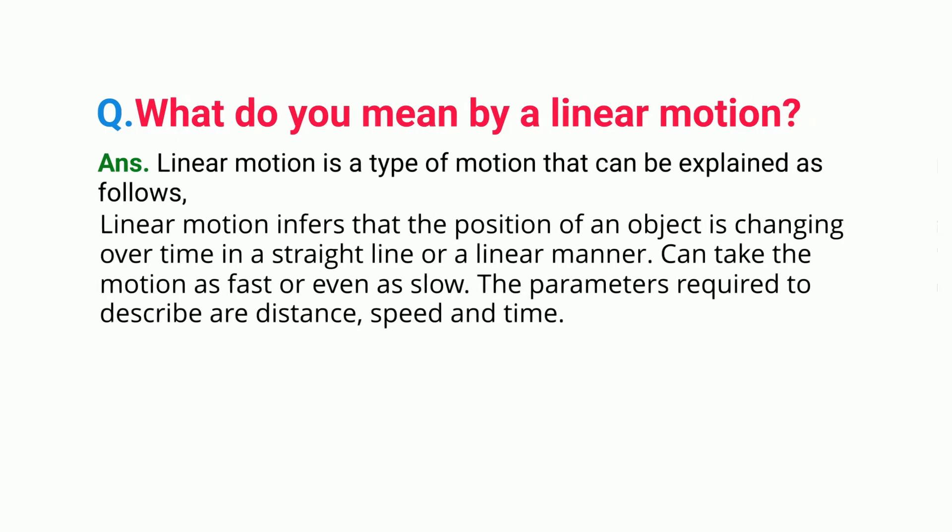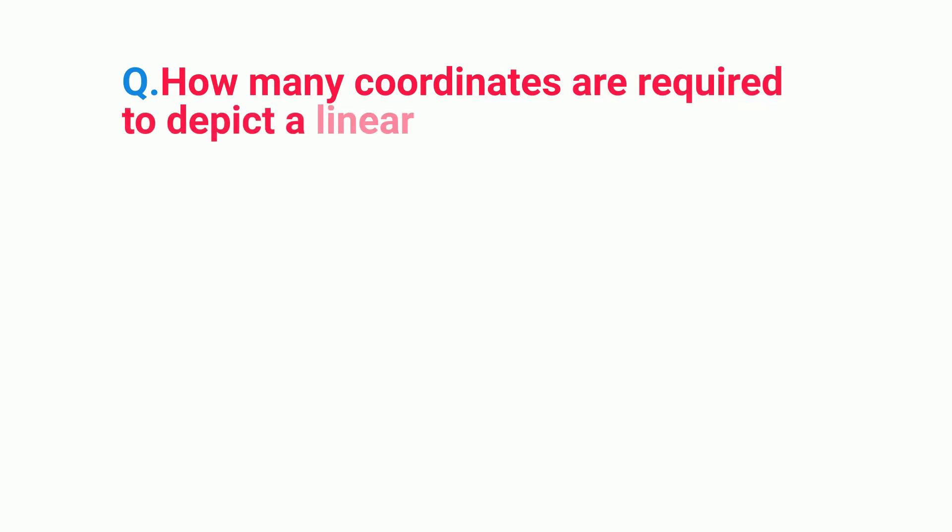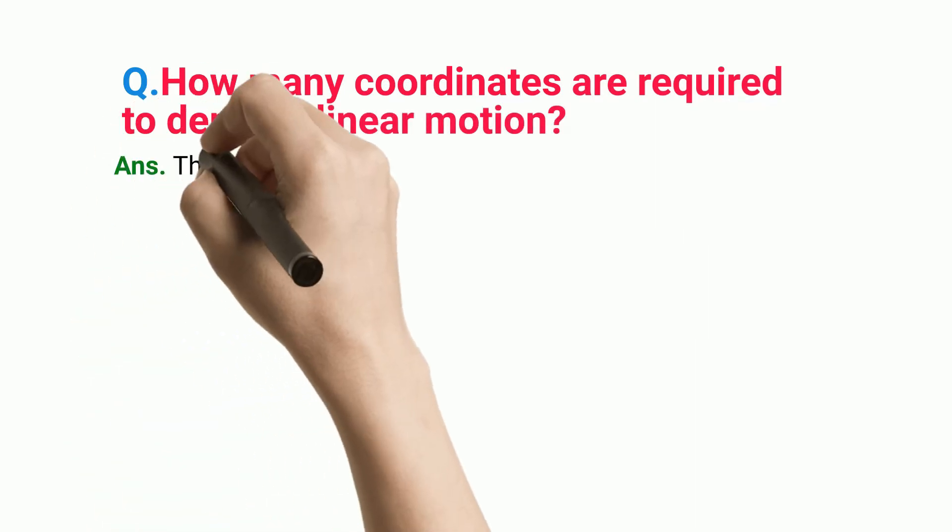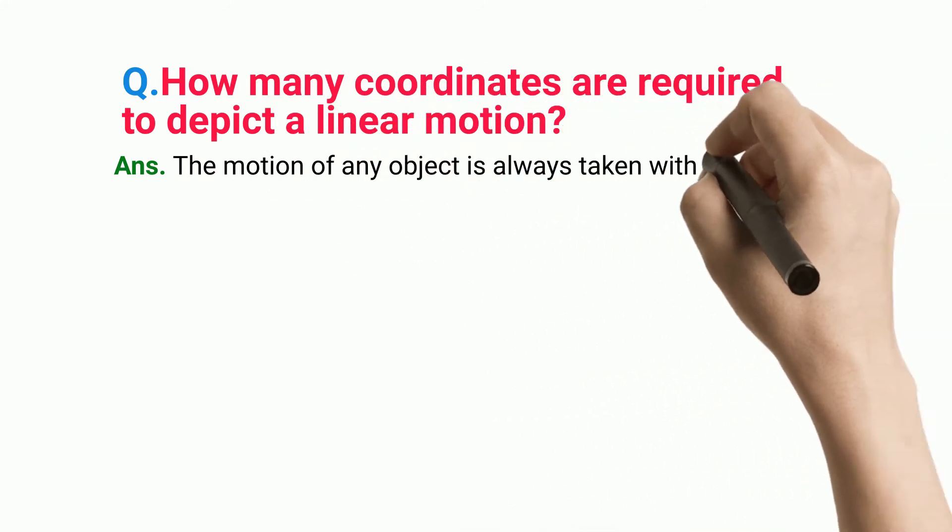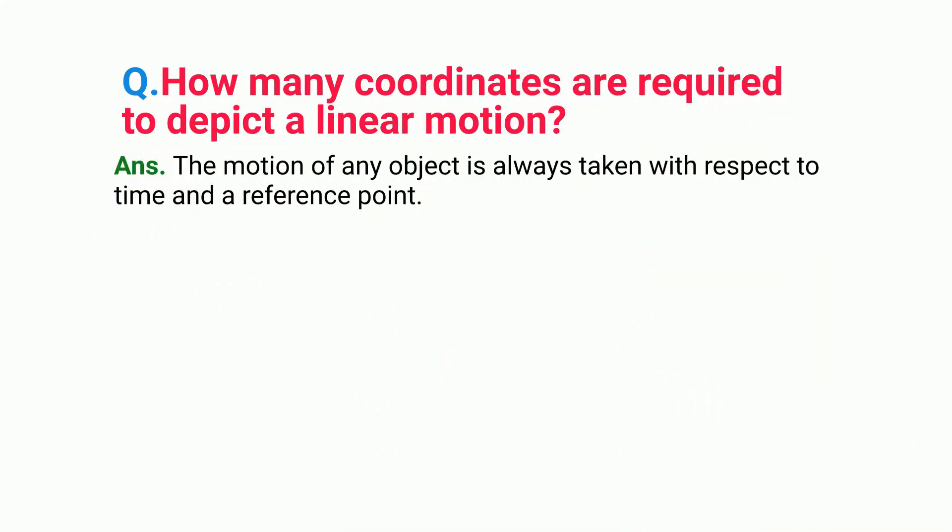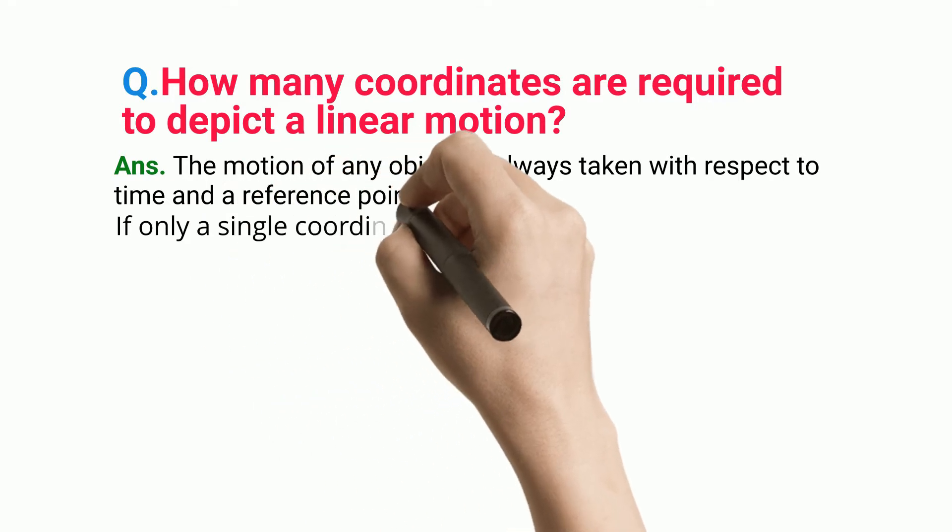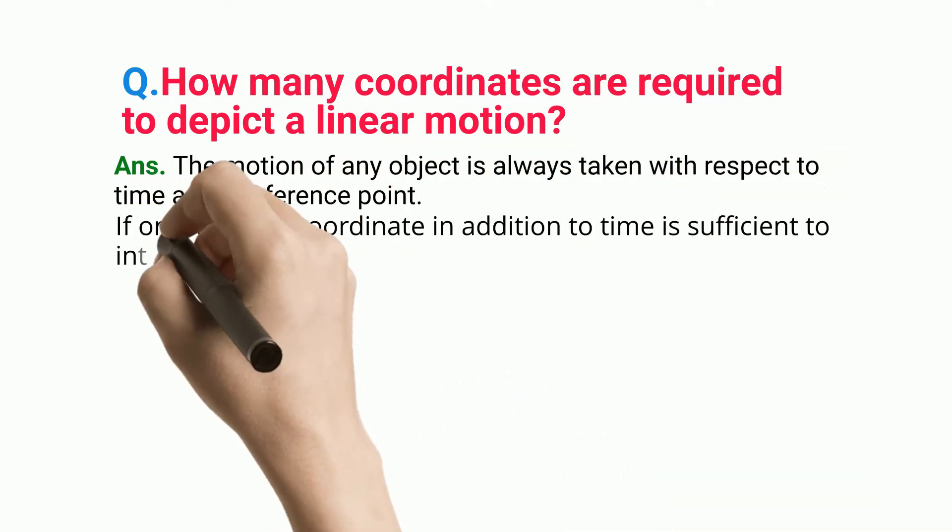How many coordinates are required to depict a linear motion? The motion of any object is always taken with respect to time and a reference point. If only a single coordinate in addition to time is sufficient to interpret the motion, it is considered a linear type of motion.